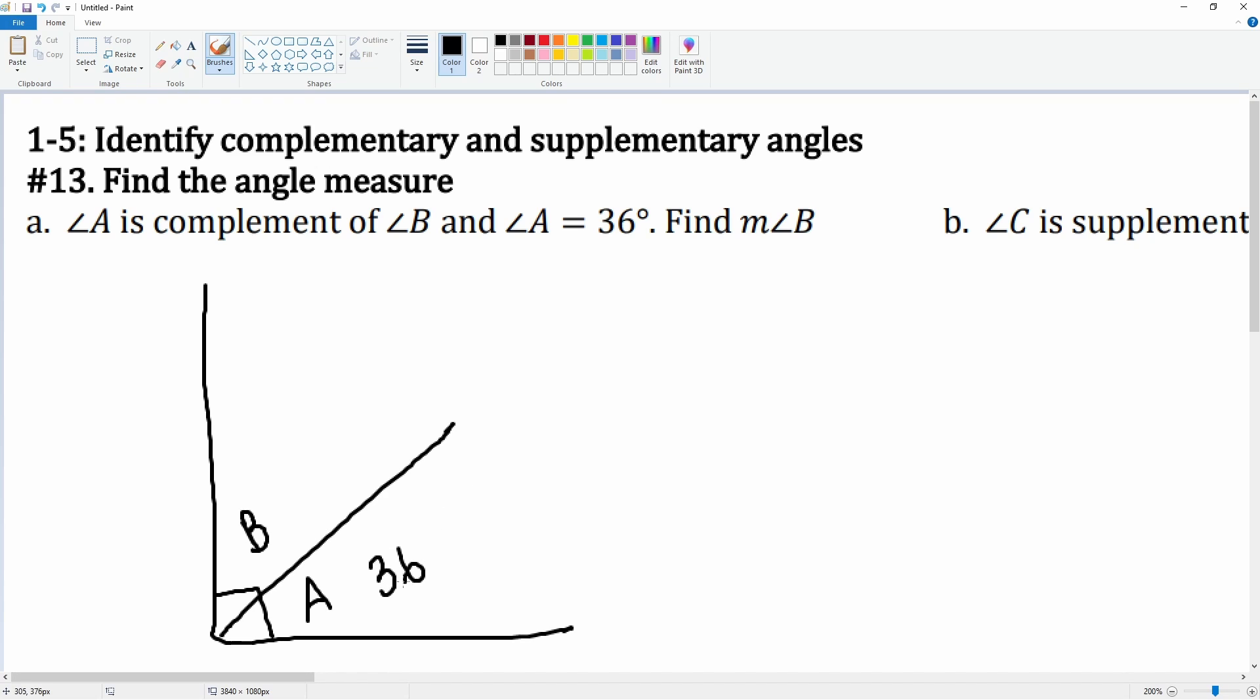This is 36 degrees. We don't know what angle B is. So we can write that angle A plus angle B is equal to 90 degrees. That's what complementary is.